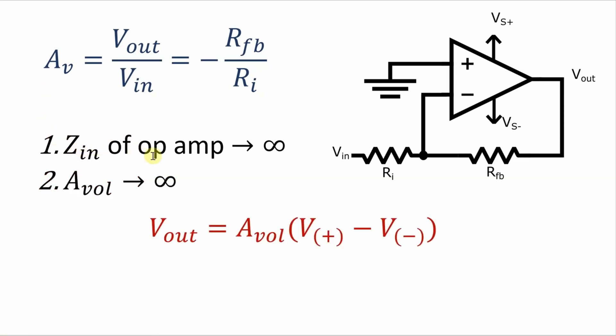The consequence of this first point is obvious. All of the current from the input voltage flows through the input resistor and the feedback resistor. None of it flows into the op-amp.